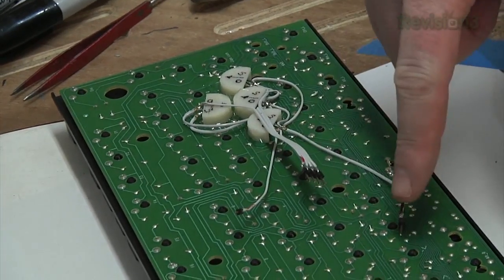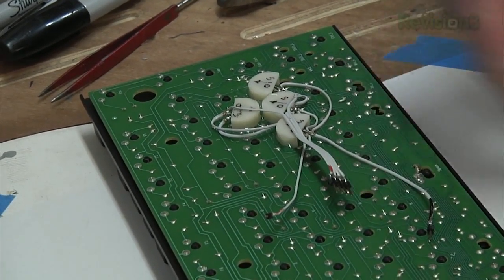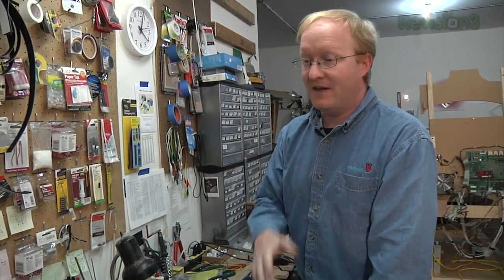So here we have our sensors wired up. We have power, ground, and then the four analog signals. So we're going to connect those to a microcontroller, and that's going to go to the Xbox 360.